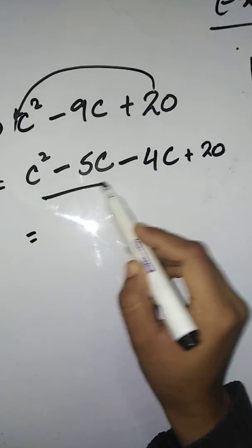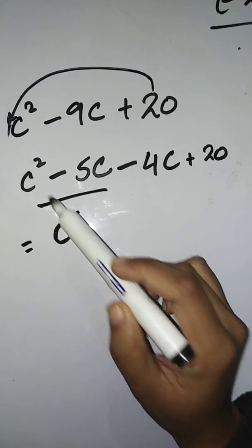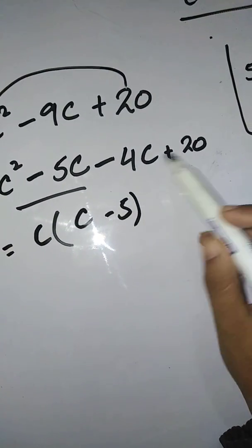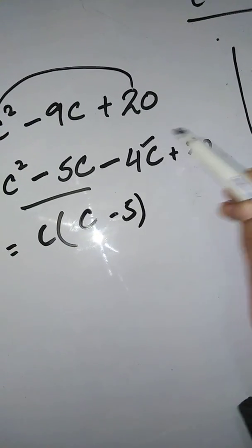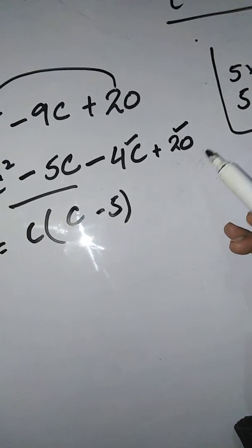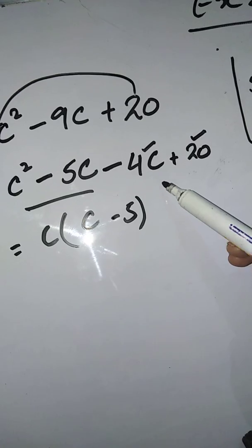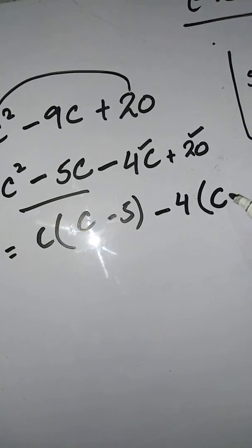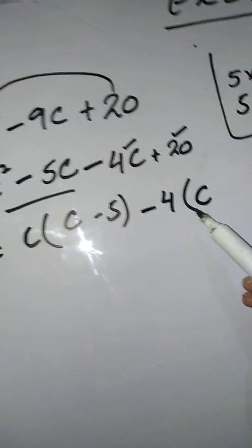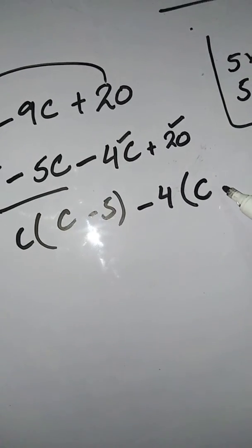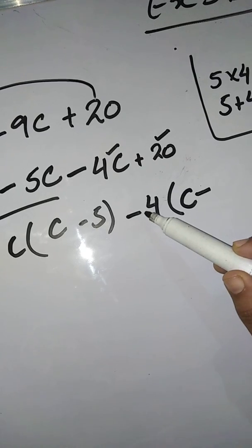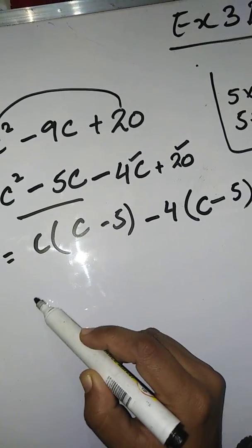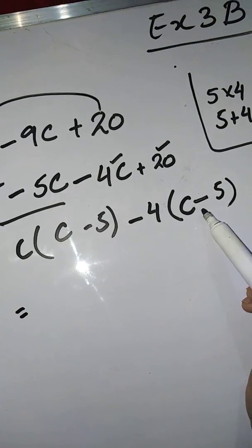Take 'c' as common from the first two terms: c² gives c, and 5c gives 5 — so c(c - 5). From the next two terms, 4 is common. Take -4 as common because of the minus sign outside the bracket — the signs inside change, so -4c becomes c and +20 becomes -5 (since 20 ÷ 4 = 5). This gives -4(c - 5). Both brackets are the same.